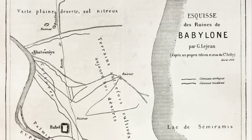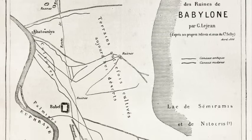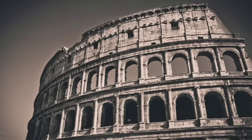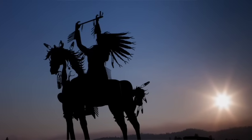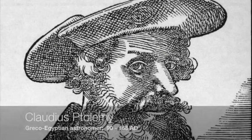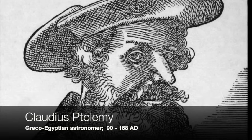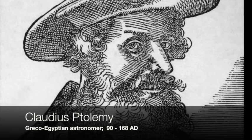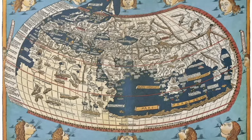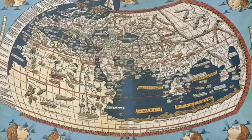Most ancient civilizations, like the Babylonians, the Greeks, the Romans, and the Native Americans, lived in the northern hemisphere, so they were only able to label stars visible in the northern latitudes. Greco-Egyptian astronomer Ptolemy identified and catalogued more than a thousand stars and 48 different constellations.